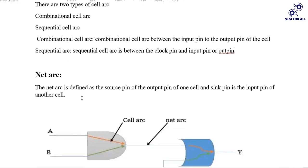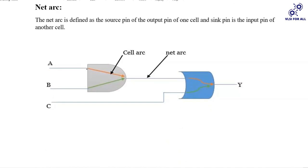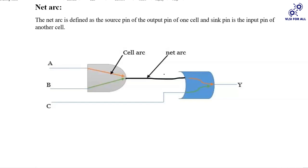Cell arc or net arc. Net arc is defined as the path from the source pin — the output pin of one cell — to the sink pin, which is the input pin of another cell. From the output pin of one cell to the input pin of the other cell — that is called a net arc.